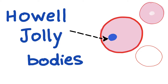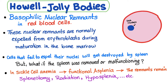Howell-Jolly bodies. Named after the American physiologist William Henry Howell and the French hematologist Justin-Marie Jolly. These are basophilic nuclear remnants — DNA clusters — found in red blood cells.